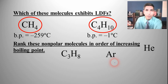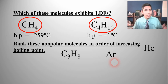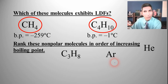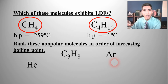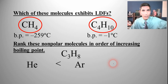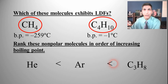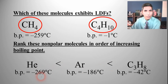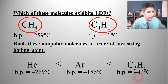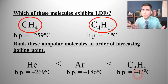So there we have London dispersion forces: everything has them, and some have more than others. Now let's take a look at a second type of intermolecular force: dipole-dipole forces. Dipole-dipole forces can be visualized with a molecule of hydrogen chloride, HCl. Chlorine has a much higher electronegativity than hydrogen, so there is a lopsided electron distribution — making this a polar molecule, with a partial negative charge on the chlorine side and a partial positive charge on the hydrogen side.